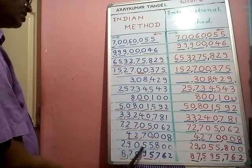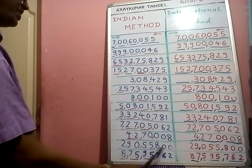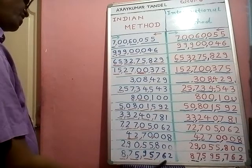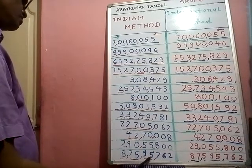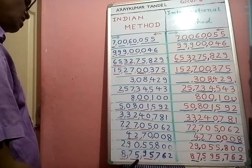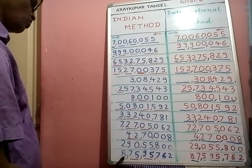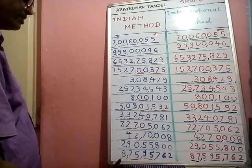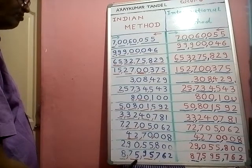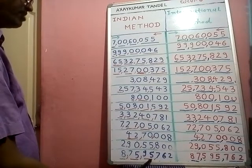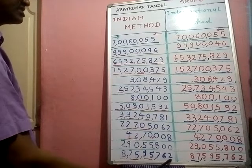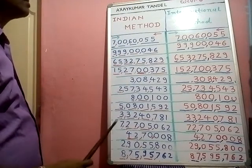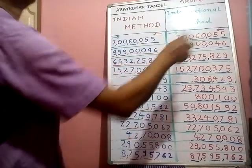Next one — ones, tens, hundreds, thousands, ten thousands, lakhs, ten lakhs, crores. We read: eight crore seventy-five lakh ninety-five thousand seven hundred sixty-two. Indian method complete. Now we start the international method.